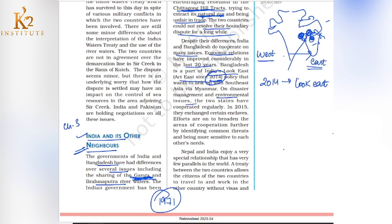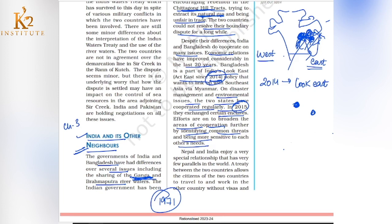The two states have also cooperated on disaster management and environmental issues. Since Bangladesh and India share a coastal region prone to cyclones and earthquakes, disaster management cooperation and refugee and relief camps are areas of good cooperation. In 2015, they exchanged enclaves — territories that were inside each other's borders were exchanged through mutual government agreement. Efforts continue to broaden areas of cooperation.